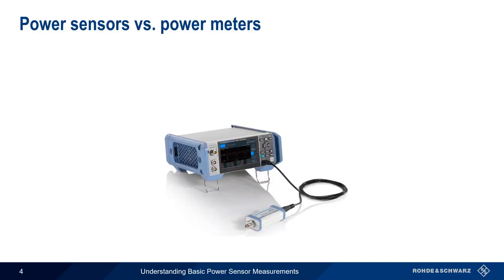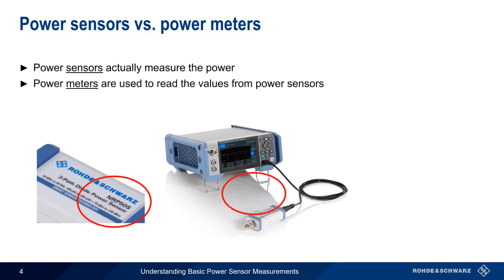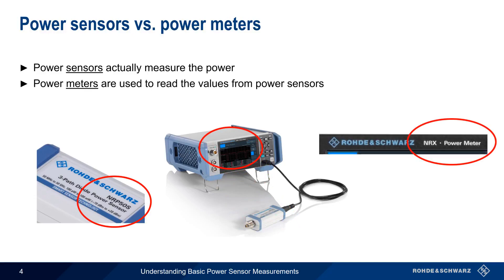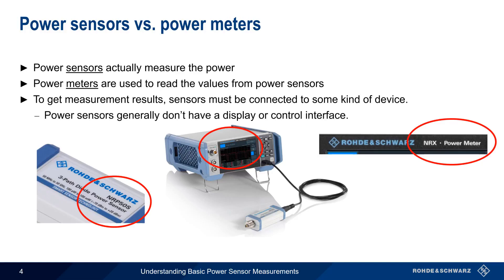One distinction we also need to make is between power sensors and power meters. Some people use these terms interchangeably, but strictly speaking, a power sensor is a device that actually measures power. On the other hand, a power meter is a device that reads the measured values from the power sensor. Note that in order to get measurement results, we have to connect our power sensor to some kind of device that can collect and display the measurements made by the sensor. Power sensors usually don't have a display or control interface, so we have to connect them to something that can configure, control, and monitor them.